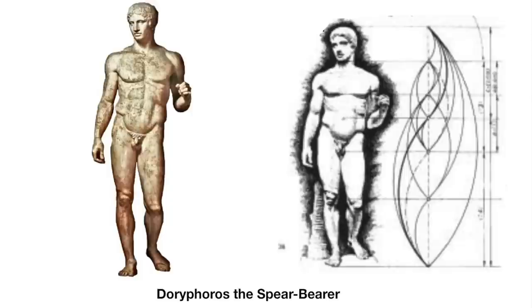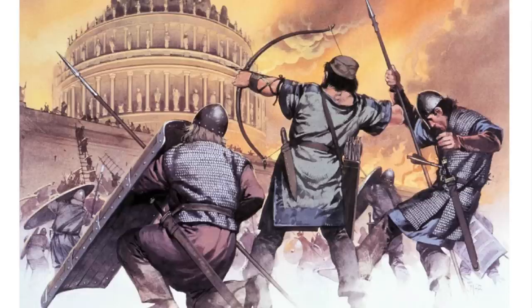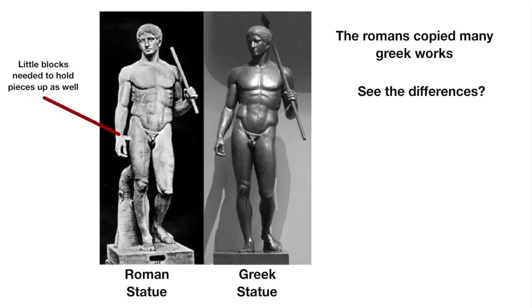This is a Greek statue that accurately represents this. The Greeks were very precise when they made their art, because they understood phi, Fibonacci, and the importance of these sequences. When the Romans took over Greece, you could see the perfection in statues just completely disappear. I'm not saying the Romans were bad artists. They just didn't measure everything to the same caliber that the Greeks did.